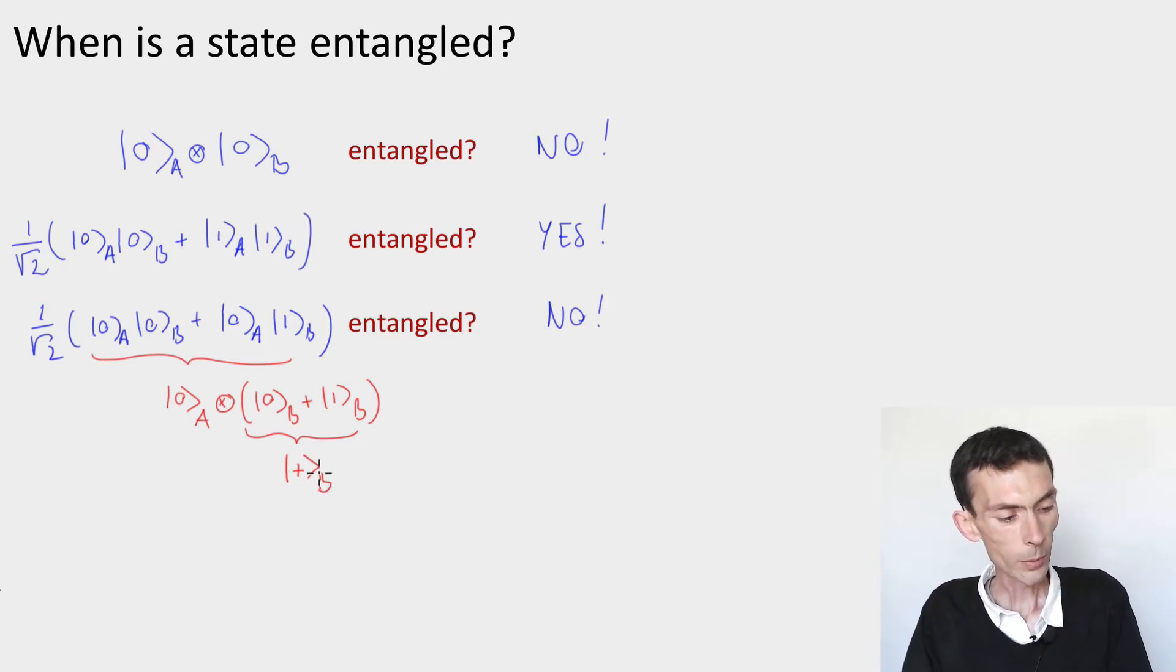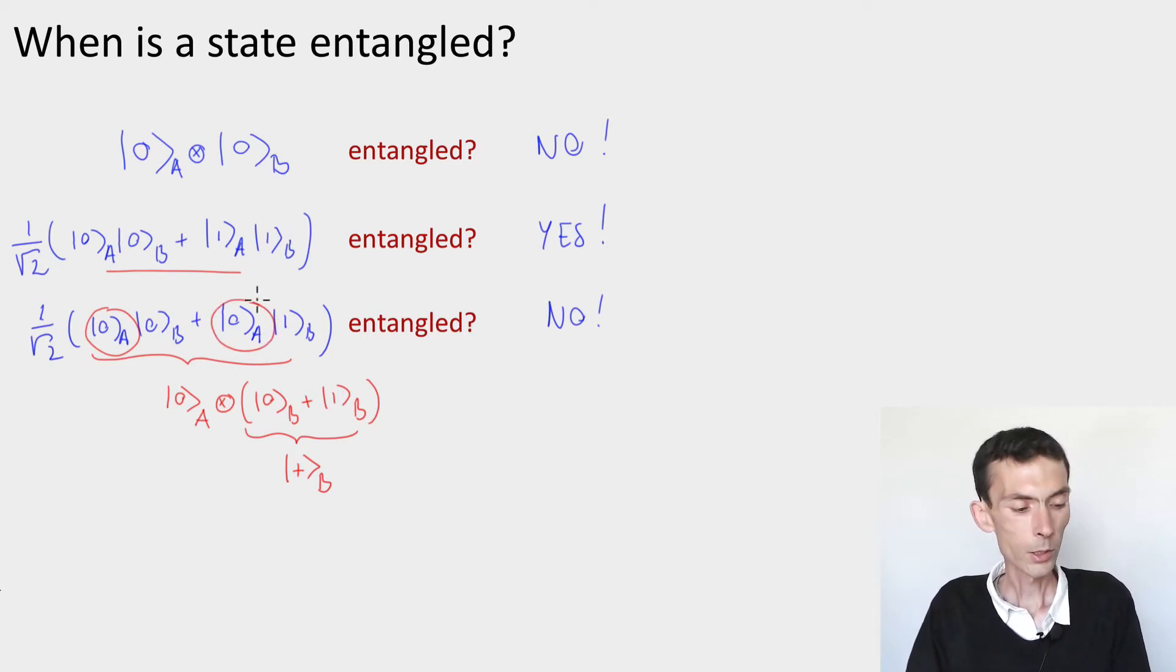And so the difference between these two states here is that the first one I gave you in a form that could not be factored, and the second one could be factored. In particular, the reason it could be factored is that the states that I used here on the A system, I used twice the same state.